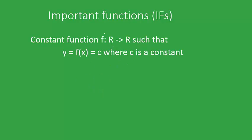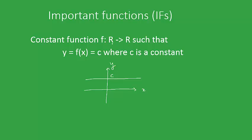The next function is defined by the functional relation R to R such that y equals f(x) equals c. Its graph looks something like this if c is some positive value. Let's also look into its domain and range, as it forms the complete analysis of these functions. The domain, from the functional definition, is the set of all elements in R, so domain equals R. The range is only the single element c, since for all values of x the value of y is only c.